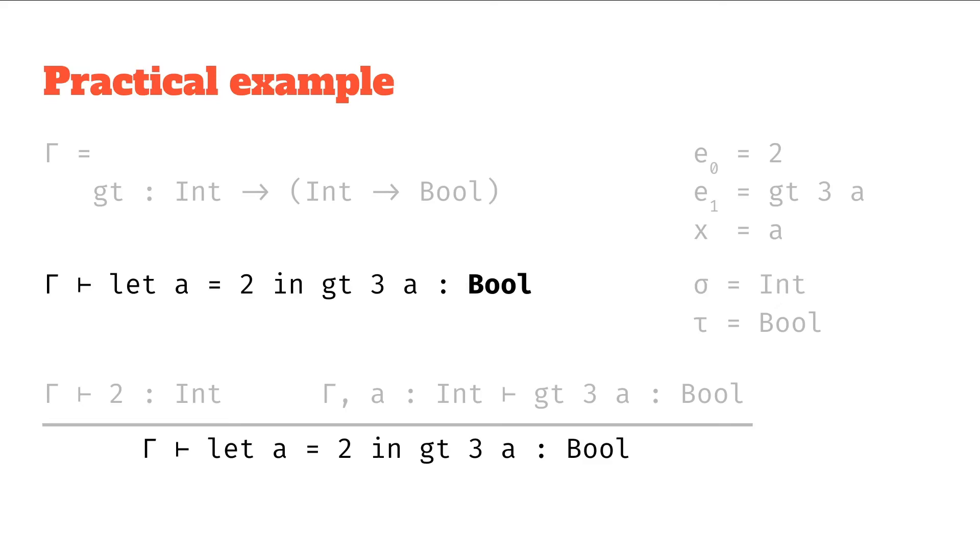So on the left hand side we could say well, 2 is an integer, probably because we have some literal rule, and on the right we've got some function application and some variable rules to apply if you wanted to try finishing off the proof.